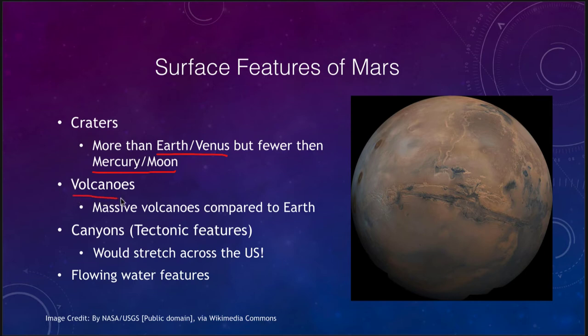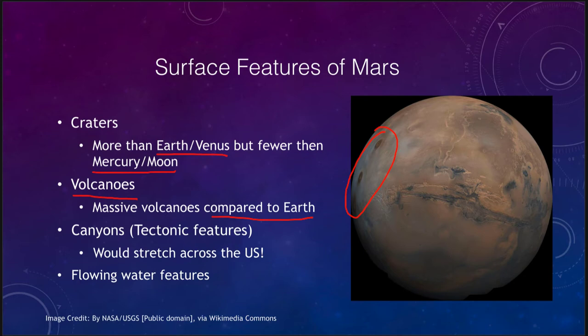We do see volcanoes on Mars — you can see several here, three in this image, and there's another even larger one we'll look at in a minute. These are massive volcanoes compared to anything on Earth. One of the reasons for that is that Mars does not have plate activity, so the volcanoes keep occurring in the same spot over and over again. Unlike the Hawaiian Islands on Earth, where the chain of islands formed because the plate was moving, on Mars the plate didn't move and the volcano erupted in the same place.